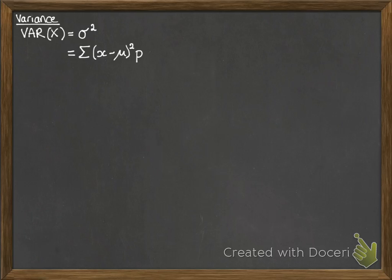However, we don't really use it in that form. As we saw when we did variance before on other things, when we were looking at frequency tables and things, there's easier ways to do it. So we have this equivalent formula. So that's the sum of x squared times p, p's being the probability, take away e of x squared.